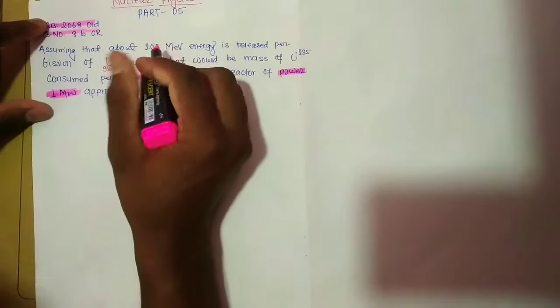Power equals energy by time. Power equals 1 megawatt, which equals 10 to the power 6 watts. 1 day equals 86,400 seconds. Therefore, power equals energy by time, so 10 to the power 6 equals energy by 86,400.